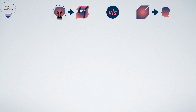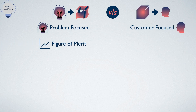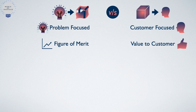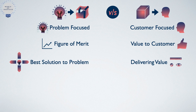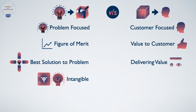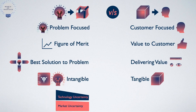To summarize: while technology development is focused on the problem, product development is customer focused. While figure of merit is an important criteria of success in technology development, value to customer is the key measure of success in product development. While technology development is geared towards exploring the best solution to the problem, product development is geared towards exploiting the technology to deliver value to the customer. Intangible assets are central to the value created to stakeholders in technology development, while a tangible deliverable product creates value to shareholders in the product development phase. Finally, technology development effort primarily lowers technology risk, while product development efforts lower market risk.